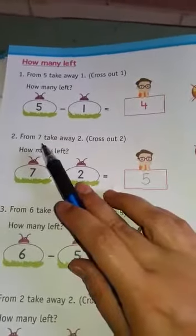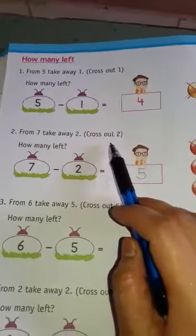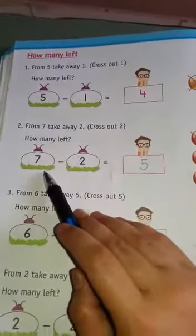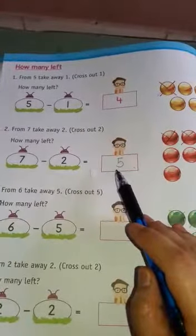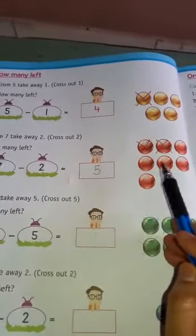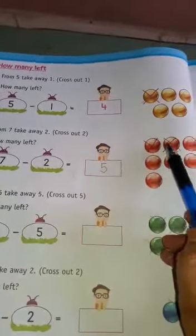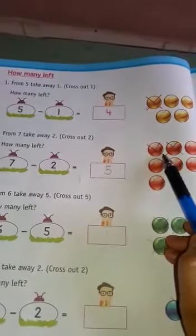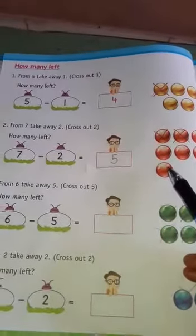Second is from 7 take away 2. Cross out 2. How many left? 7 minus 2 equals to 5. Count the answer — 1, 2, 3, 4, 5. 5 balls are left.